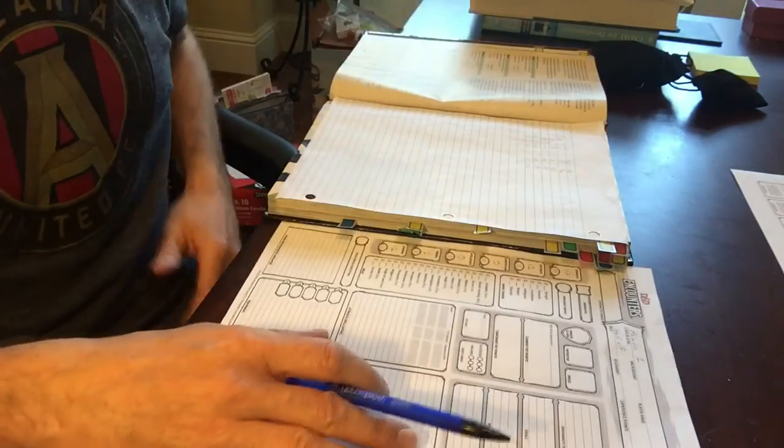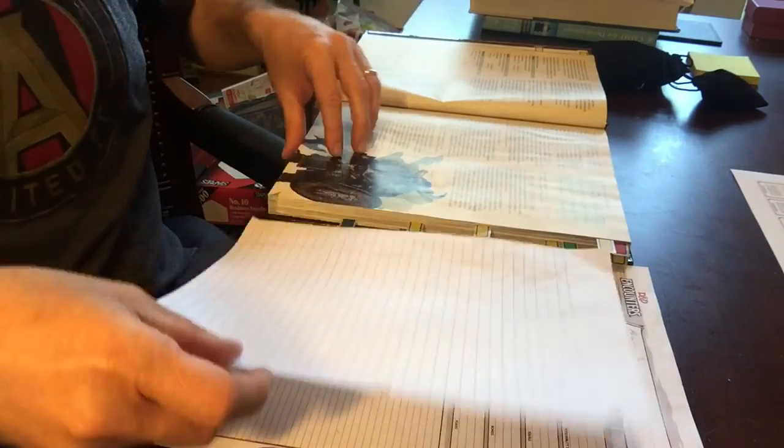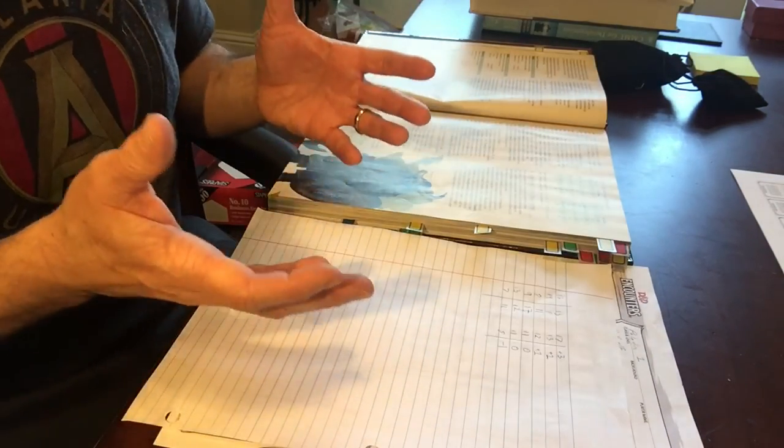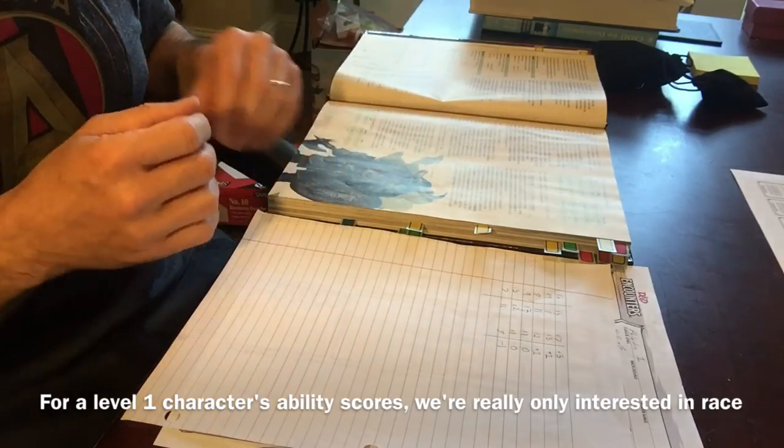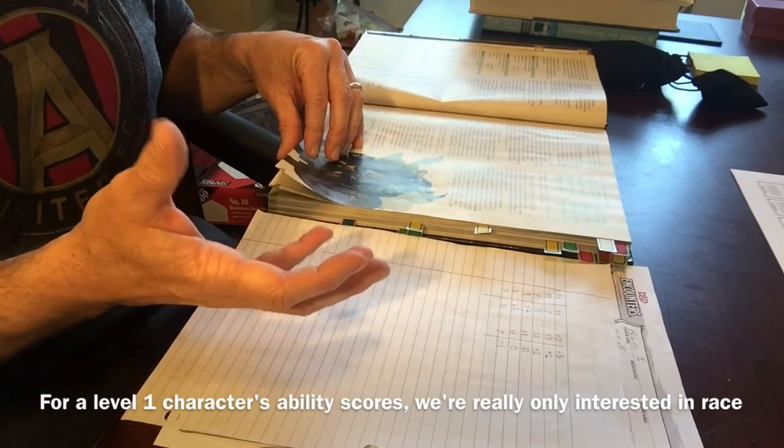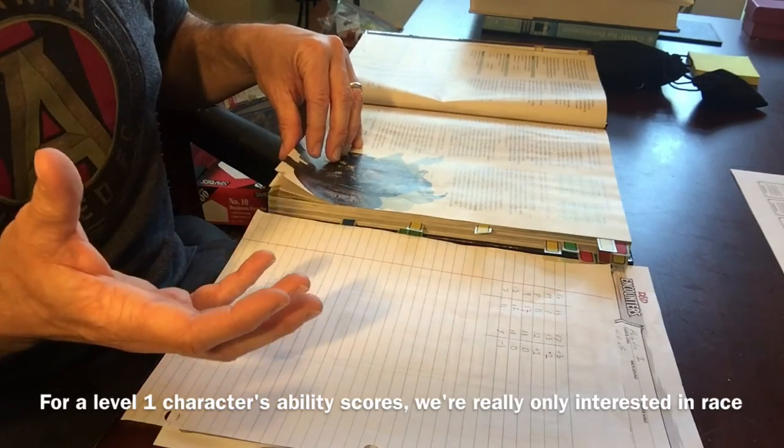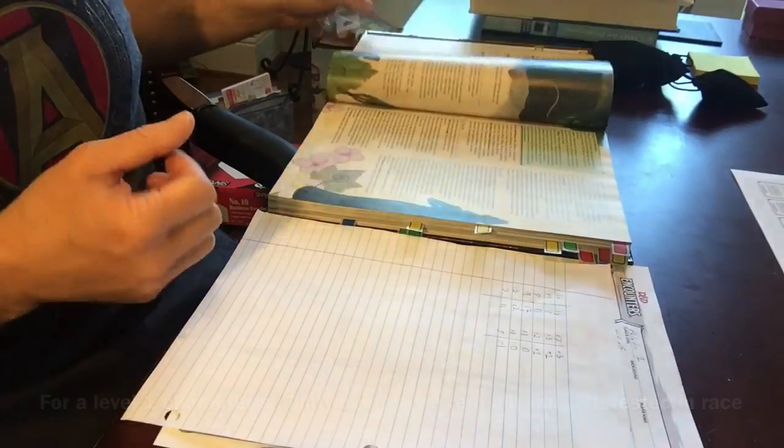And now we have our ability scores and our ability modifiers. Just like that. And then we'll go back to the book and find out, okay, based now on the fact that it's a paladin and a half-elf, what can we add? What are their strengths by virtue of their race? What are their strengths by virtue of their class?